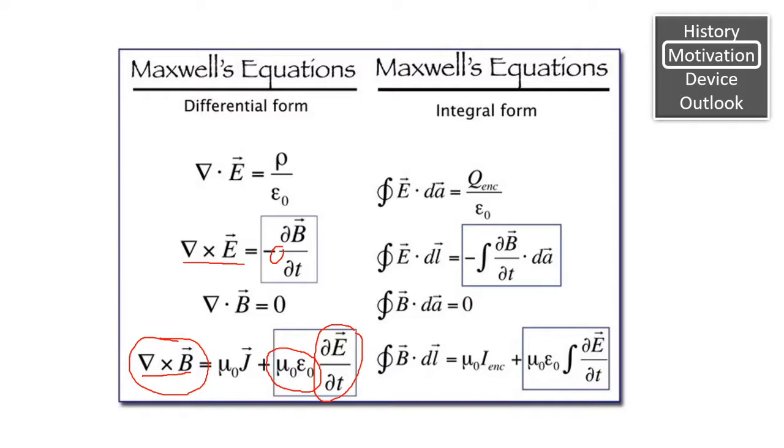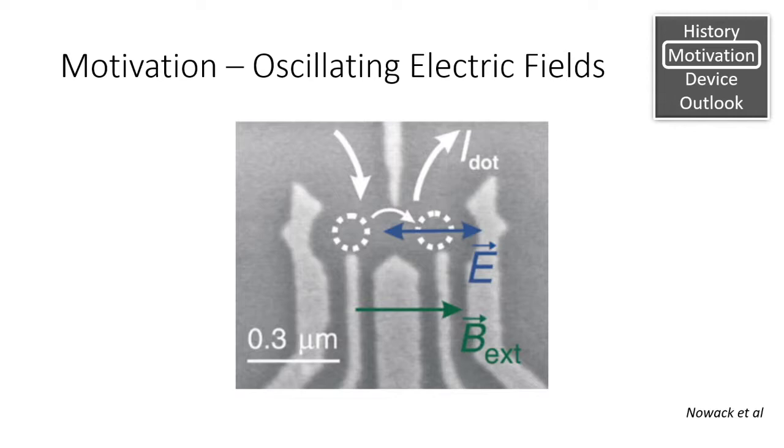So the actual engineering issues surrounding this are a little bit more complex, but this provides the general intuition for why it's harder to generate an oscillating magnetic field versus an electric field.